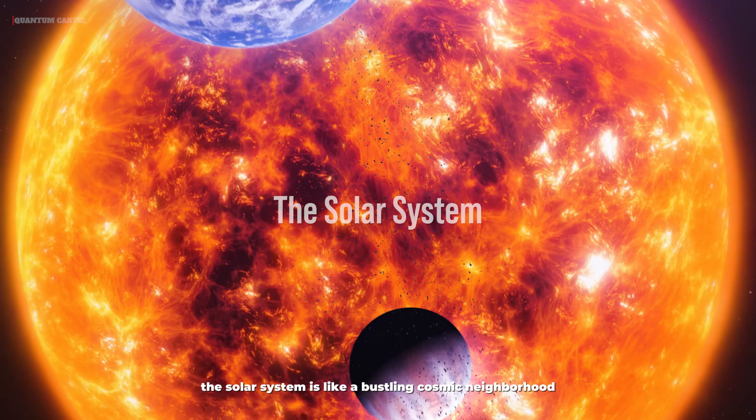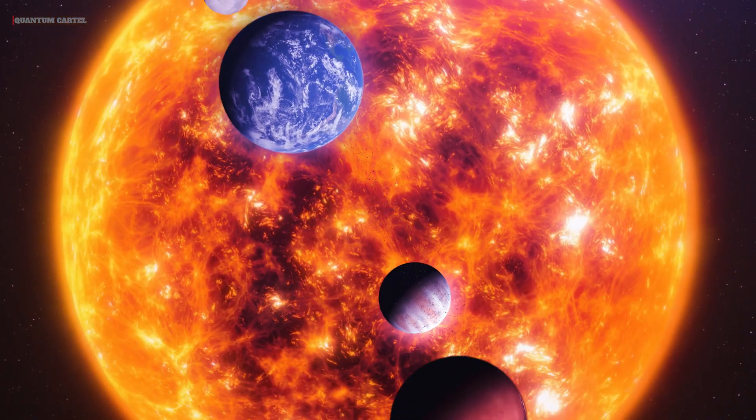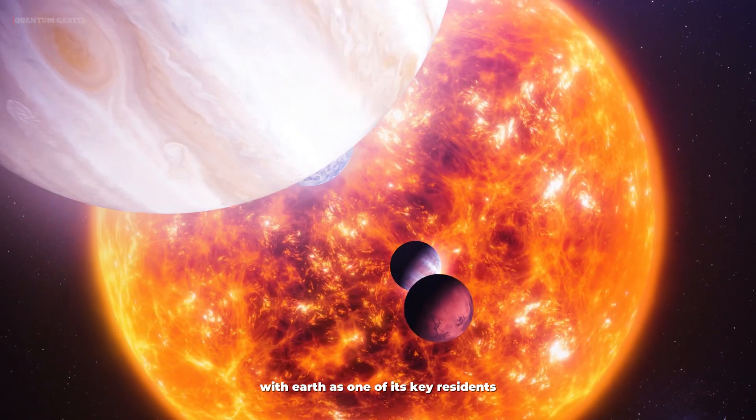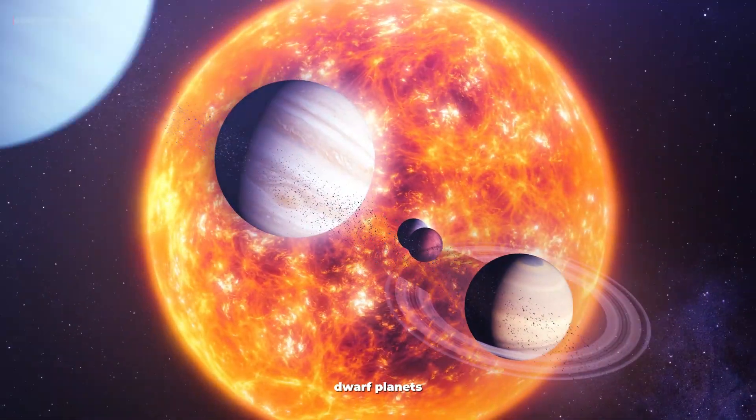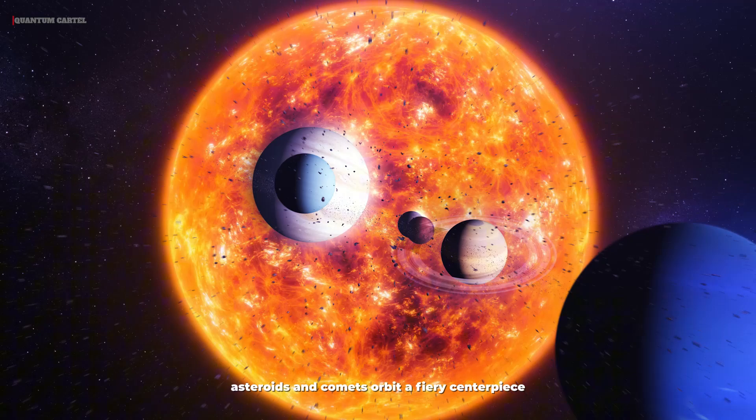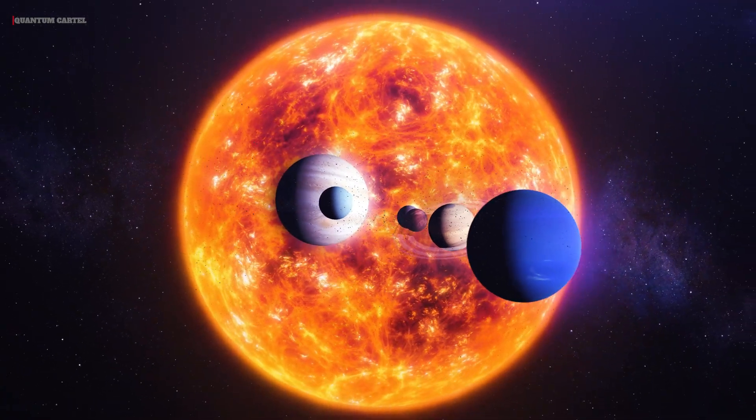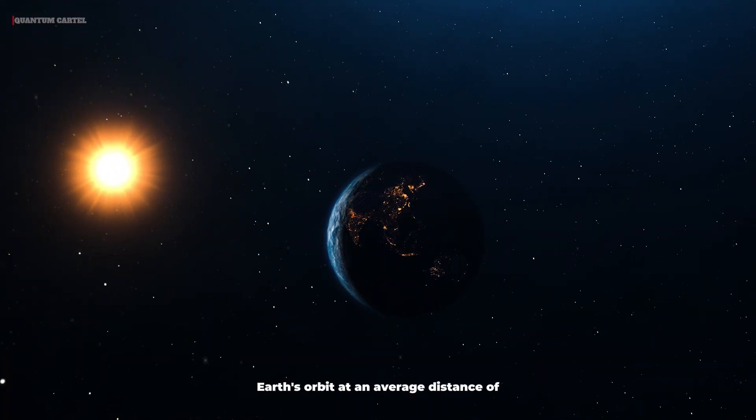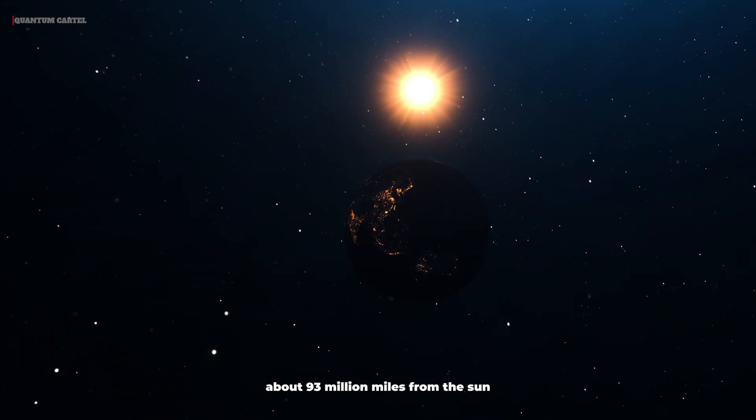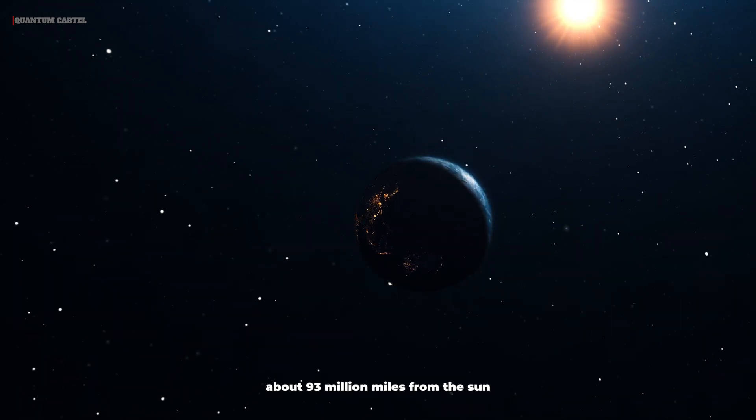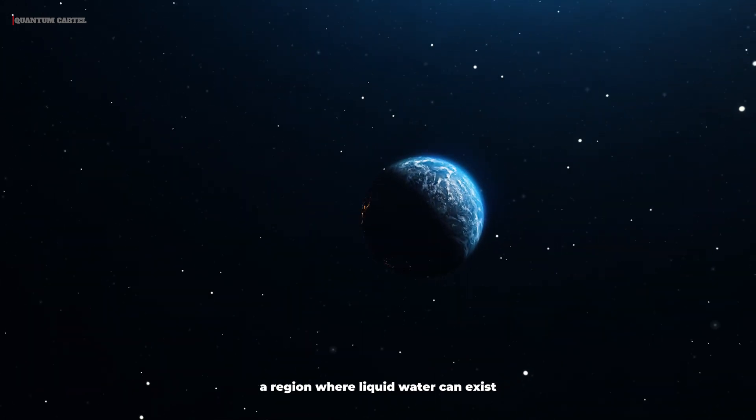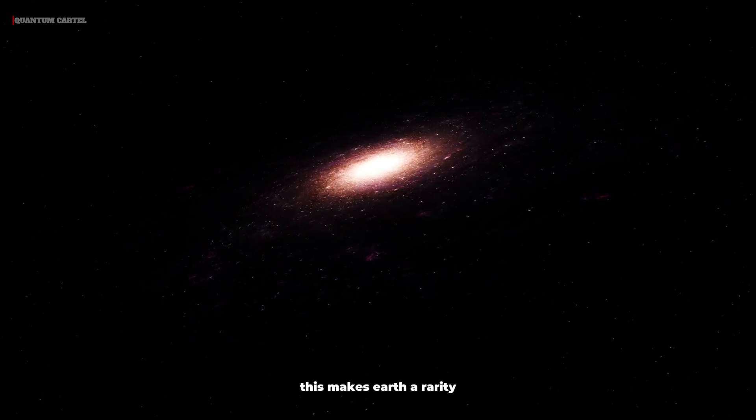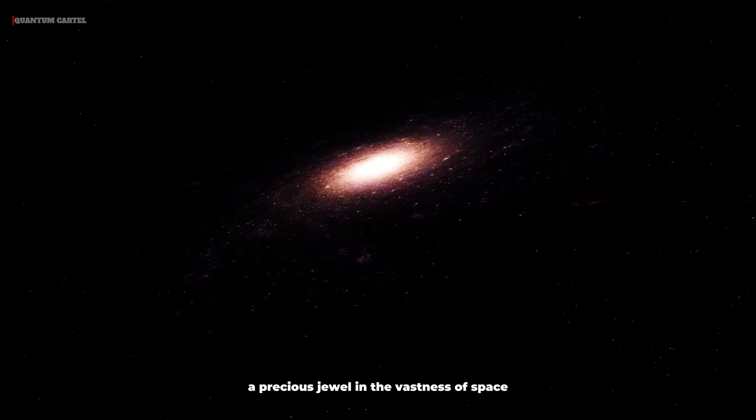The solar system is like a bustling cosmic neighborhood, with Earth as one of its key residents. Eight planets, numerous moons, dwarf planets, asteroids, and comets orbit a fiery centerpiece, the sun. Earth's orbit, at an average distance of about 93 million miles from the sun, lies within the habitable zone, a region where liquid water can exist. This makes Earth a rarity, a precious jewel in the vastness of space.